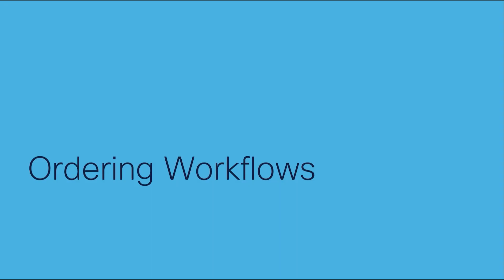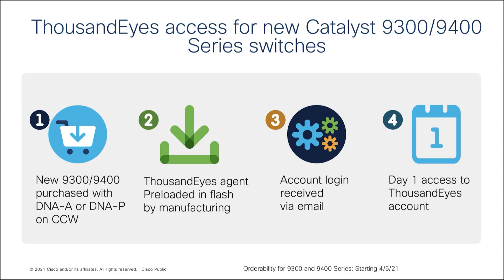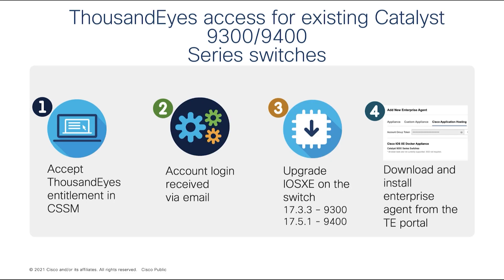Now that we know the integration benefits, let's look at how to order for new and existing 9300 and 9400 switches. For new Catalyst 9300 and 9400 orders, you will see an option to choose a ThousandEyes SKU on CCW. Once you order it, the ThousandEyes agent will be pre-loaded by manufacturing and shipped to you, and you will receive an email with ThousandEyes account login credentials. All you have to do is deploy the ThousandEyes Enterprise agent on the Catalyst 9000 and start using ThousandEyes on day one. For existing 9300 and 9400 switches, you will need to log into Cisco CSSM and accept the ThousandEyes on-demand offer — it is completely no cost. You will then receive ThousandEyes login credentials, upgrade your switches, and deploy the ThousandEyes Enterprise agent from your ThousandEyes account.